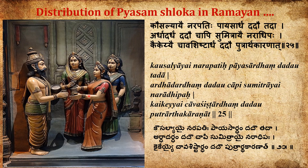In Valmiki's Ramayana, Balakanda, a shloka has been given describing how King Dasharada distributed the Payasam to his queens. Let's see the shloka: Kaushalyaay narapathihi payasardham dadautada, Artha dadardham dadau chaapi Sumitraya naradipaha, Kaikeya chava shishtardham dadau putrardha karanad. This shloka tells us exactly how King Dasharada distributed the Payasam to his queens.